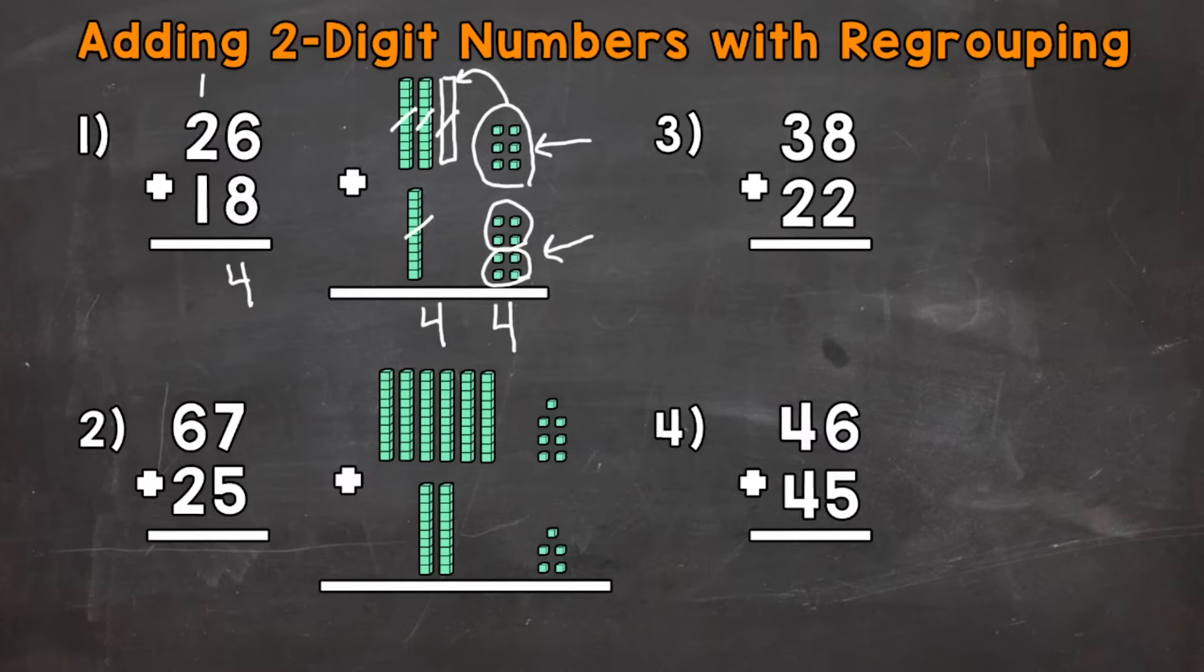Now let's add the tens. 1 ten plus 2 tens plus 1 ten. So 1 plus 2 is 3 plus 1 is 4. So we get 44 again.